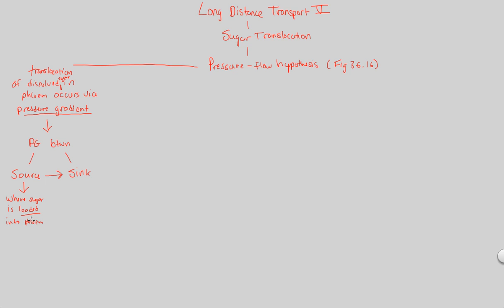The phloem is our highway to move sugar around. In this loading process, we establish a high pressure gradient — we essentially have high pressure at the source. The sink is the area at which sugar is unloaded from the phloem; the phloem provides sugar to a sink that needs to store or metabolize it. At the sink, we have a low pressure gradient. So the pressure gradient goes from high pressure at the source to low pressure at the sink — always from source to sink. That's the basic premise behind the pressure flow hypothesis.